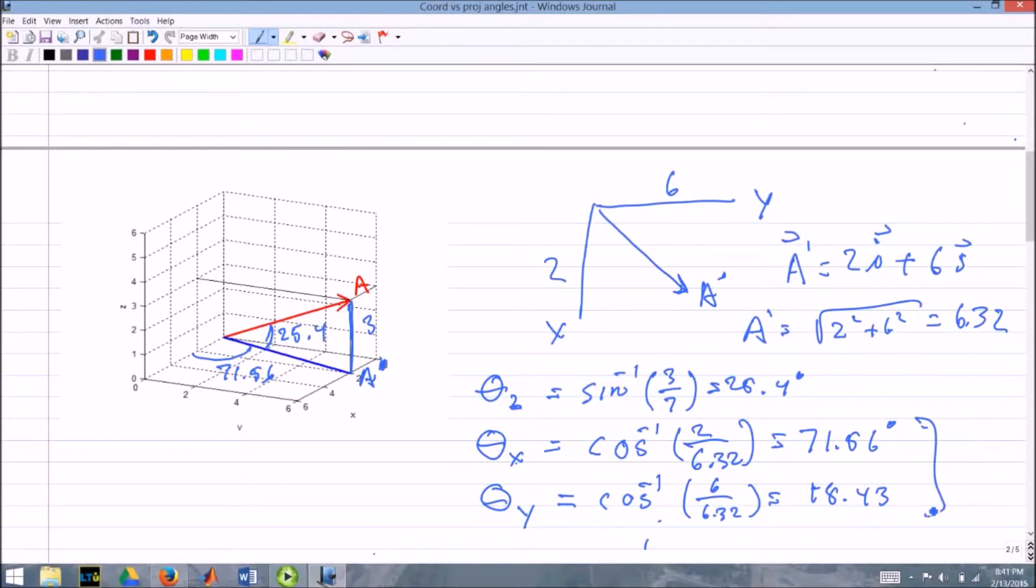Looking to the left, this has a magnitude of 7 on vector A. We have the angle 25.4 between the vector and the xy-plane, and we have the angle of 71.56 between the x-axis and the vector A-prime. That is a way of expressing this vector in projection angles.